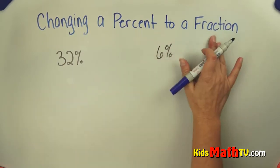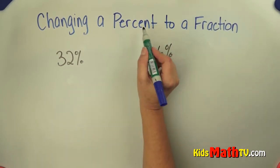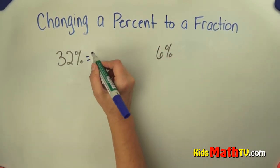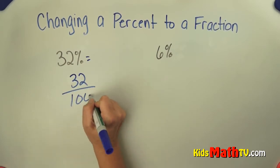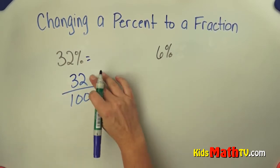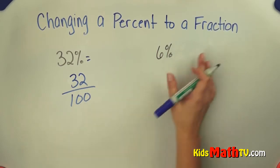As a fraction, 32%. Percent, remember, means per 100. This is simply 32 per 100. It's a ratio. 32 out of 100, or 32 to 100. Now we have a fraction.